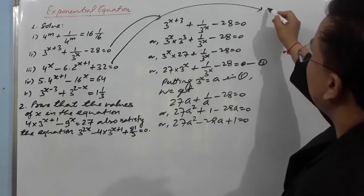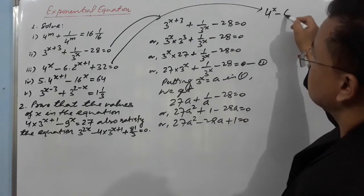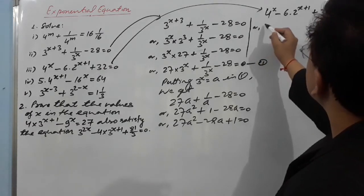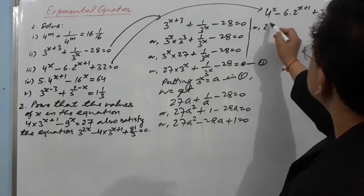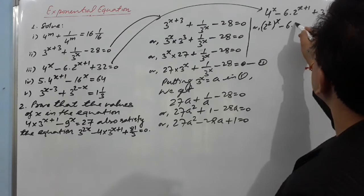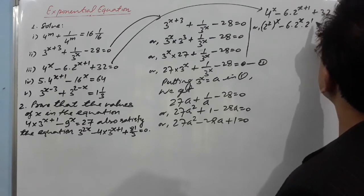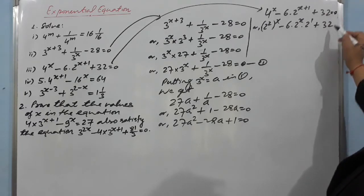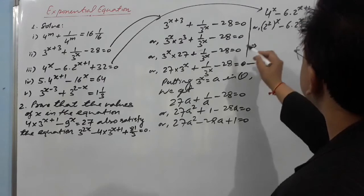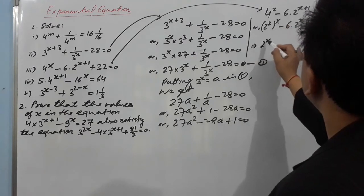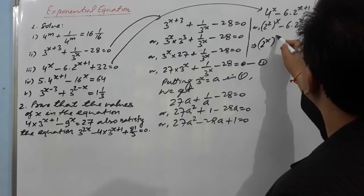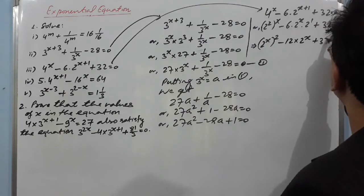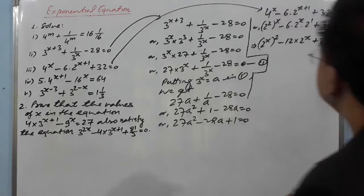Question 3: 4x − 6 × 2^(x+1) + 32 = 0. Since we have 2^x, let's convert: 4^x = (2²)^x = (2^x)², and 6 × 2^(x+1) = 6 × 2^x × 2 = 12 × 2^x. So the equation becomes: (2^x)² − 12 × 2^x + 32 = 0.